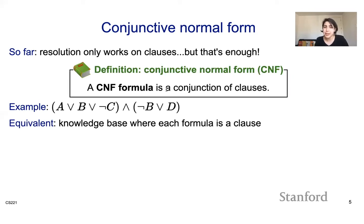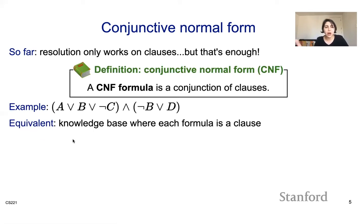A conjunctive normal form (CNF) formula is a conjunction of clauses. An example is: clause (A or B or negation of C) AND (negation of B or D). You can think of this as equivalent to having a knowledge base where each formula is a clause, and the conjunction of those clauses gives you the CNF formula.